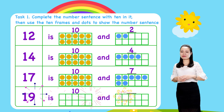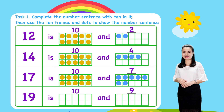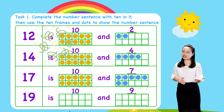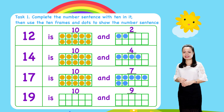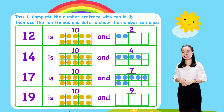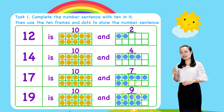The last one: 19 is 10 and 9. Number 19 is decomposed into 10 and 9. To show this number sentence, draw 10 dots in the ten frame to represent number 10, then draw 9 more dots to represent number 9.